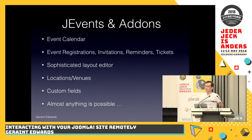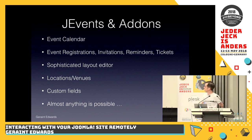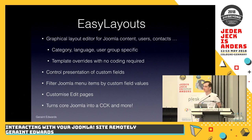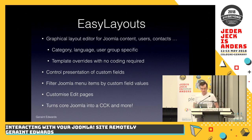I started off with jEvents and its add-ons, which if people don't know about it, it's an event calendar. We have add-ons that provide registrations, invitations, reminders, tickets, and so forth. We have a fairly sophisticated layout editor, managing locations and venues, custom fields — basically almost anything event-related you can do with jEvents and its add-ons. Another thing that we have is Easy Layouts, which I did a presentation about last year at J and Beyond. It's a graphical layout editor for Joomla content, users, and contacts. It allows you to create customized layouts based on category, language, or user-group-specific layouts — basically template overrides without any coding. It gives you good control over custom fields, filtering menu items, custom edit pages, and so forth. Basically makes Joomla into a CCK.